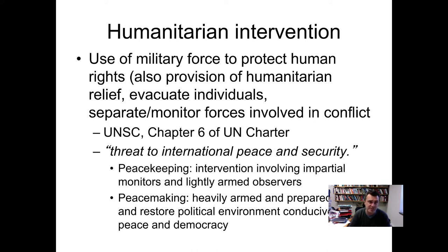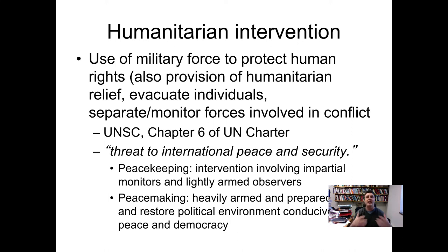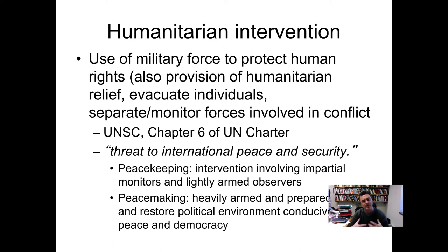The closest thing we have is Chapter 6 of the UN Charter, which gives the task of monitoring international peace and security to the UN Security Council. If the Security Council decides that a breach to international peace and security has occurred, it could authorize humanitarian intervention — though it does not appear anywhere in the UN Charter; it's really an ad hoc decision. We have two types: peacekeeping, involving impartial monitors and lightly armed observers, and peacemaking — heavily armed and prepared to fight, to restore a political environment conducive to peace and democracy.